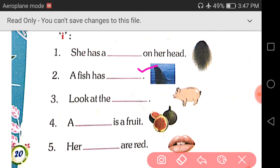What is it? A fish has fin. F-I-N, fin. F-I-N, fin. Write down fin. Number three, look at the pig. P-I-G, pig.